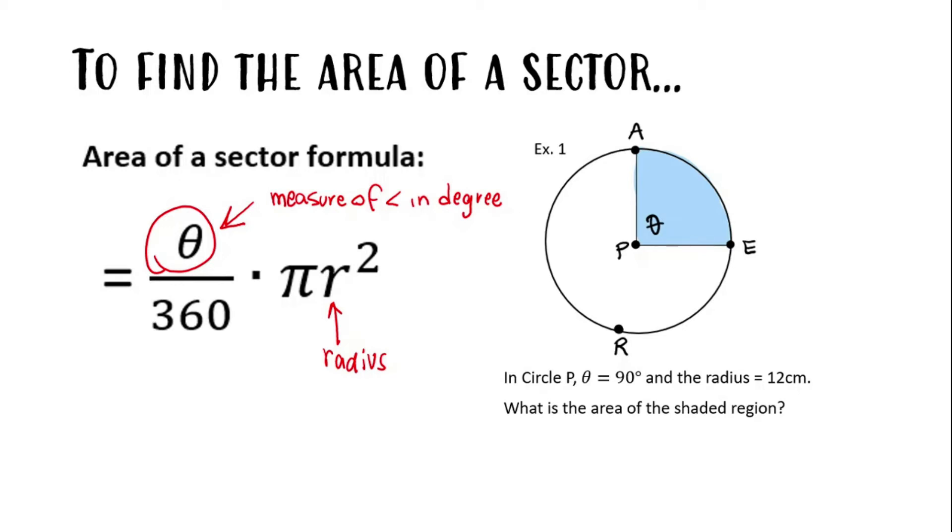For the example to the right, it says in circle P, the angle measure is equal to 90 degrees, and the radius is equal to 12 centimeters. What is the area of the shaded region?